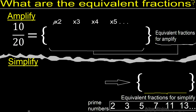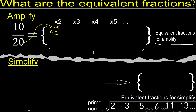First multiply by 2: 10 times 2 is 20, 20 times 2 is 40. Now multiply by 3.